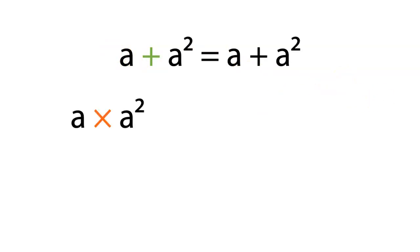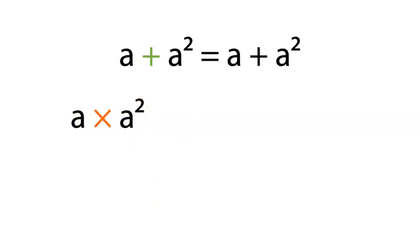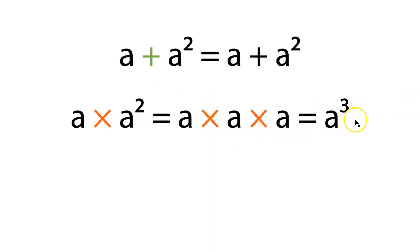But what happens when this turns into multiplication? When it turns into multiplication, you know first and foremost that you can multiply anything in the world times anything in the world. So a times a squared — we can do this. a squared is the same thing as a times a, so we could actually write this as a times a times a. And this simplifies to a cubed.